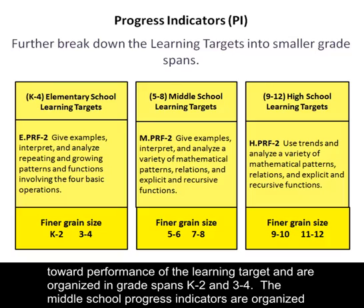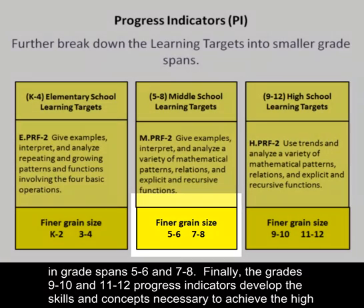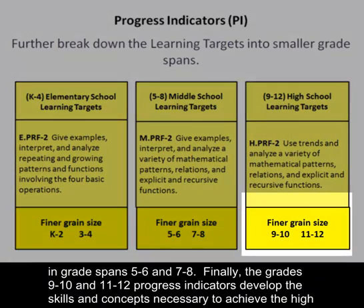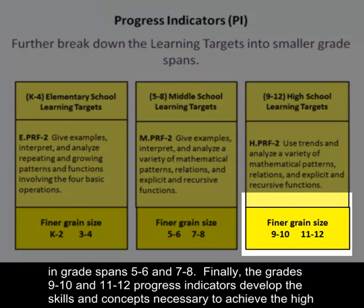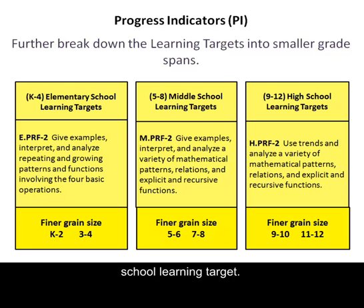Progress indicators are organized in grade spans K-2 and 3-4 at the elementary level. The middle school progress indicators are organized in grade spans 5-6 and 7-8. Finally, the grades 9-10 and 11-12 progress indicators develop the skills and concepts necessary to achieve the high school learning target.